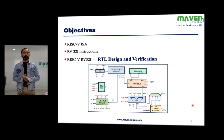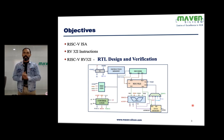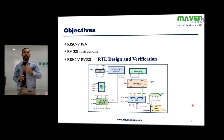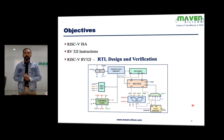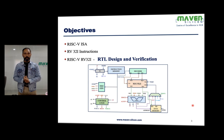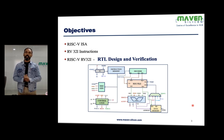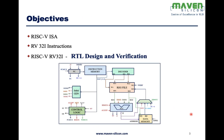Let me set the expectation. As a VLSI engineer, you are going to learn RISC-V assembly programming primarily to design a processor which can implement all RV32I instructions. You will also explore how to improve performance by doing pipelining — implementing a five-stage pipeline processor — and then verify the processor using methodologies like UVM, Universal Verification Methodology.